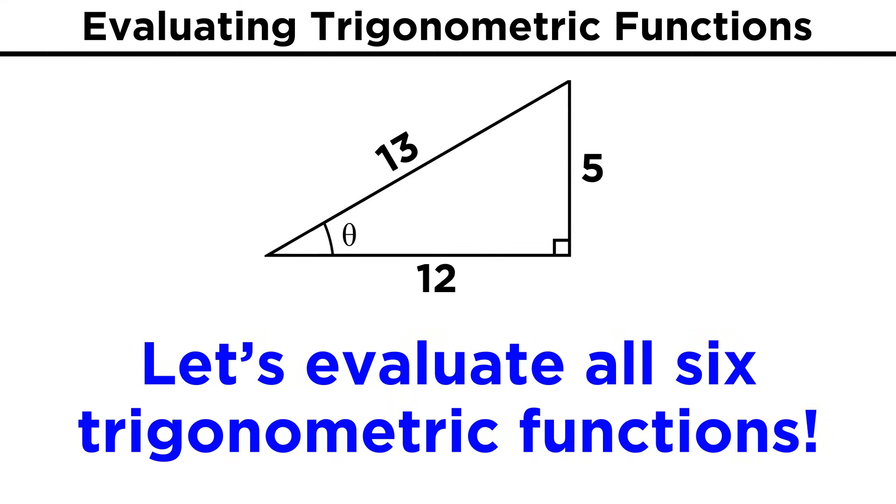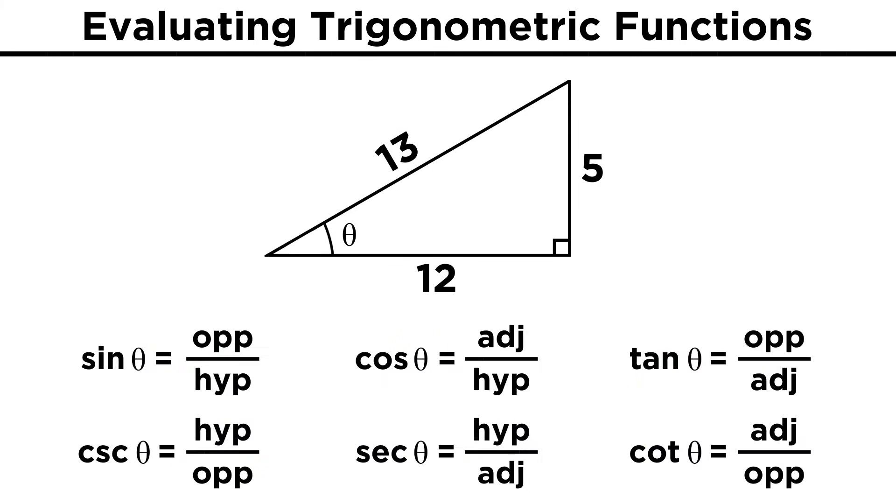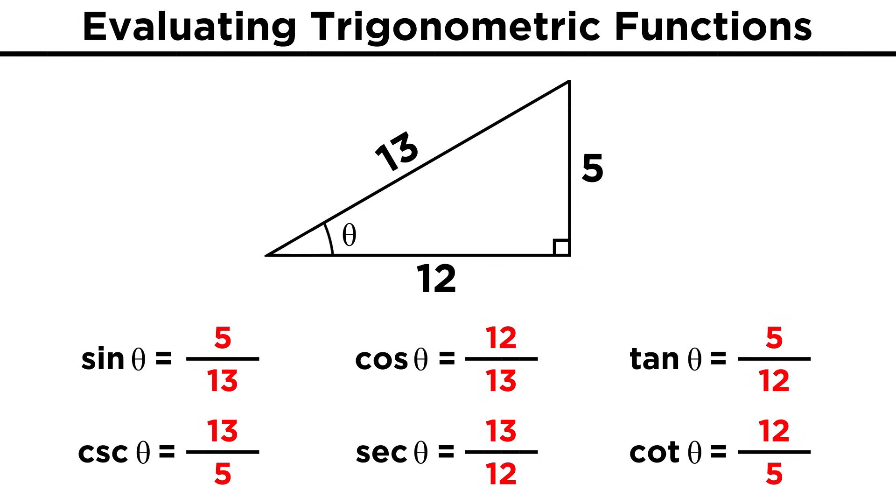So let's take this triangle with sides of five, twelve, and thirteen, and evaluate all six trigonometric functions for this angle. We can place all the letters first to represent the sides involved in each calculation. Then we fill in the respective numbers. See that there isn't really any reducing to be done, so these are the six values we end up with.